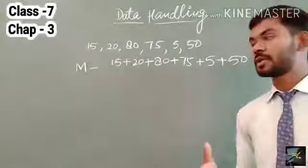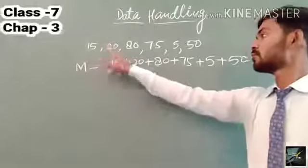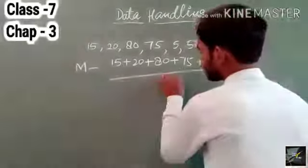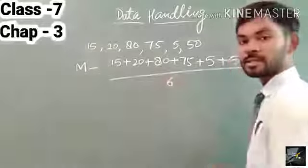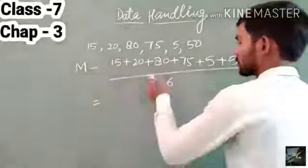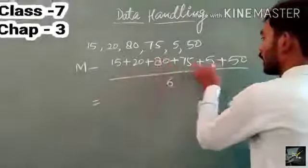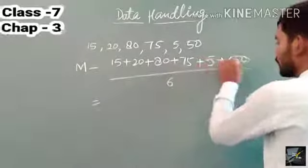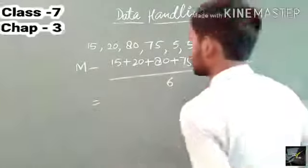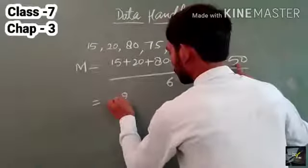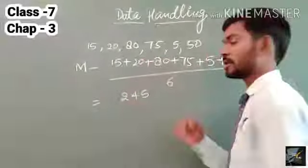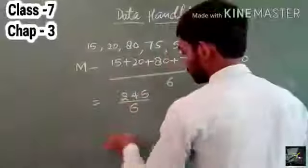Now count the number of data: 1, 2, 3, 4, 5, 6. Therefore the number of data is 6, so we divide by 6. Computing the sum: 20 plus 80 is 100, plus 80 — continuing the addition — we get 245 as the sum. So it is 245 divided by 6.